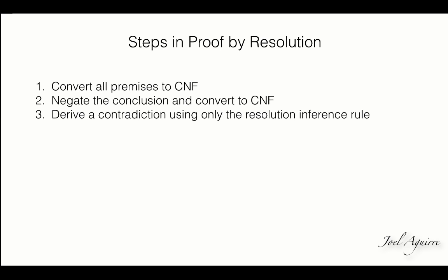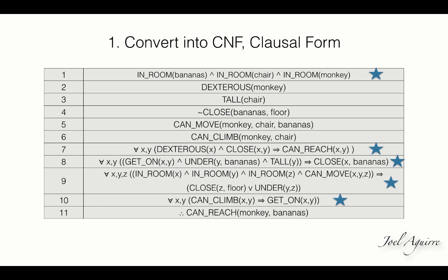Proving by resolution method requires to first convert premises to conjunctive normalized form or CNF, then negate the conclusion, and finally, look for a contradiction using only the resolution inference rule. Let's take a look at the statements again and convert them into CNF and clausal form. Quantifiers need to be removed. Since there are no existential quantifiers, there's no need to skolemize.